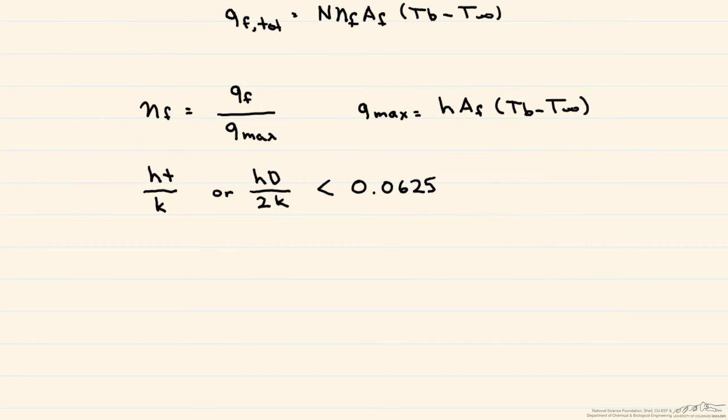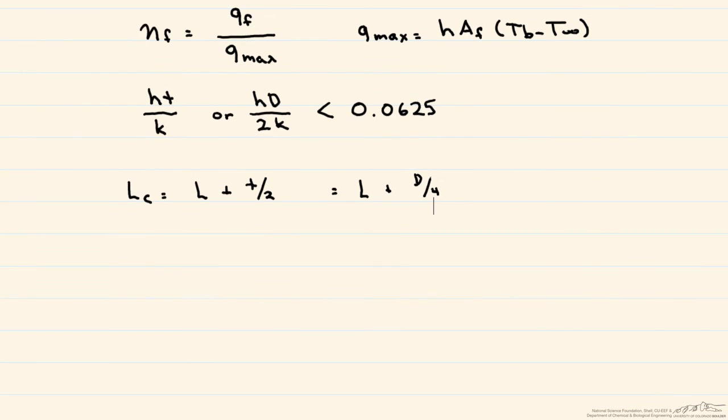So, let's look at this corrected length. So our Lc, if you have this rectangular fin, is the length of the fin plus the thickness divided by 2. Or, if you have a pin fin, its corrected length is its length plus its diameter divided by 4. And so this corrected length is used in the calculation of the area of the fin. So the area of the fin is equal to 2 times that w times Lc, or it can be equal to pi times D times Lc.